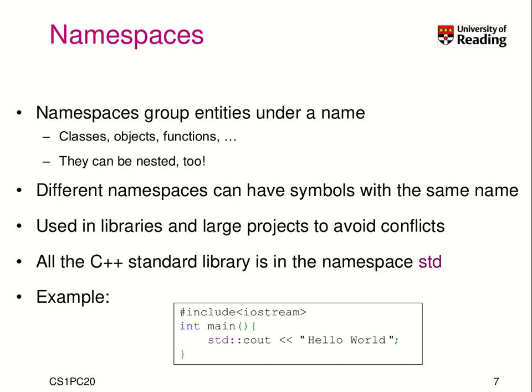You can have nested namespaces as well, which means you can have a namespace such as std. And then under std you can have something like std-algo for algorithms underneath std. You can have different namespaces that have symbols with the same name. So that means I can have the same function name in a different namespace.